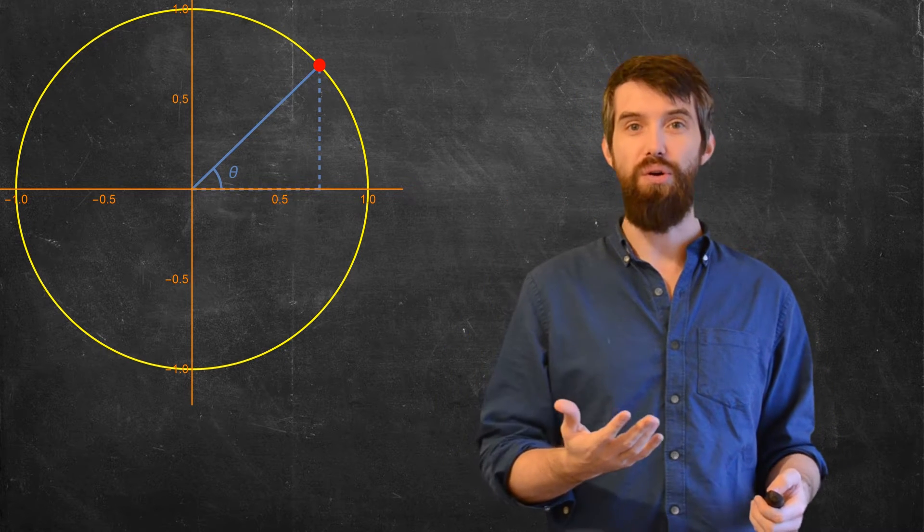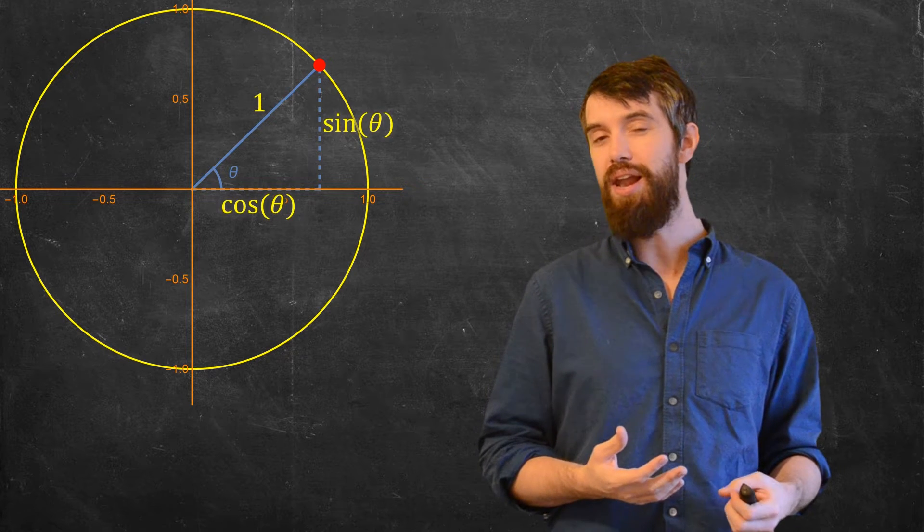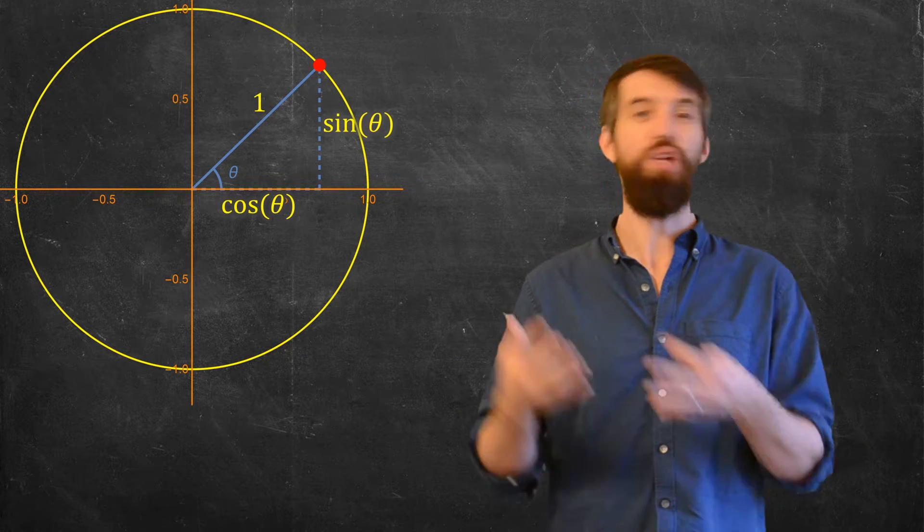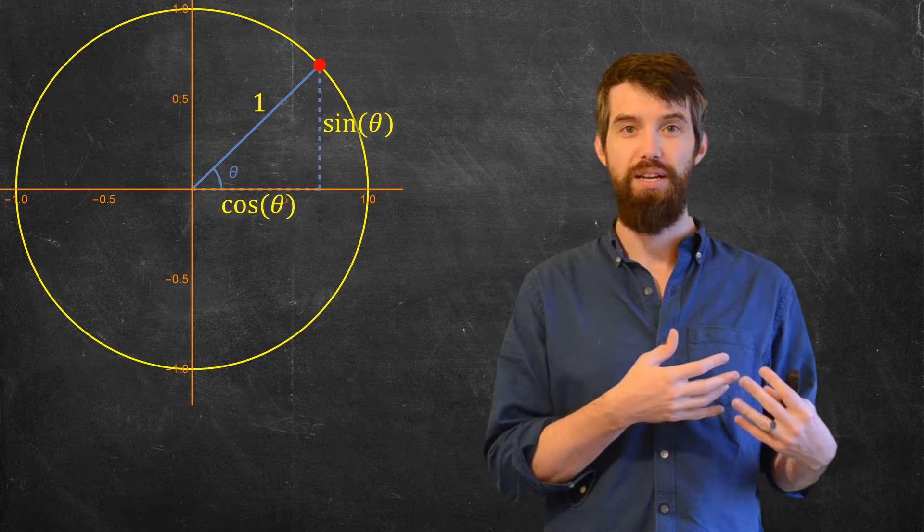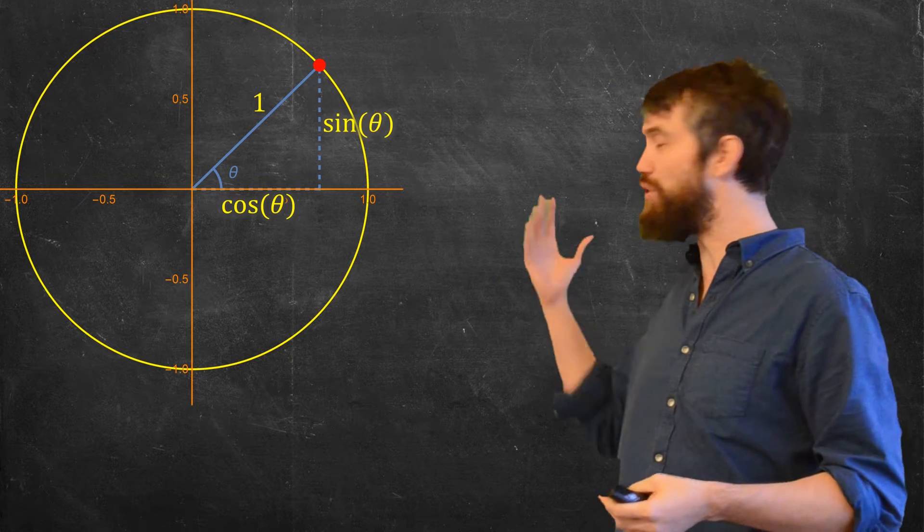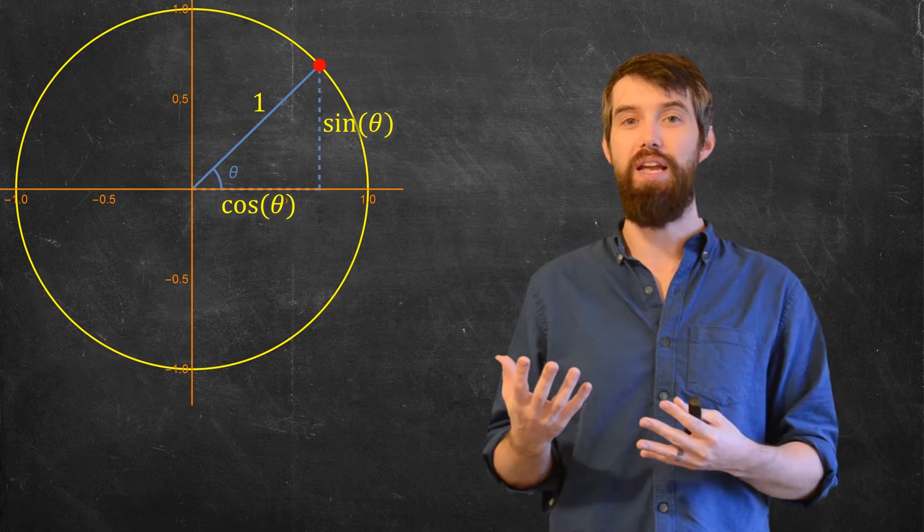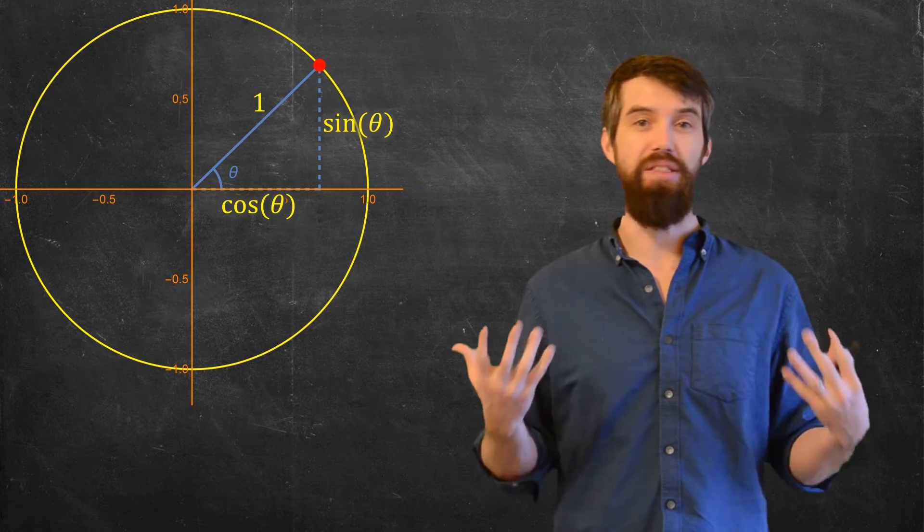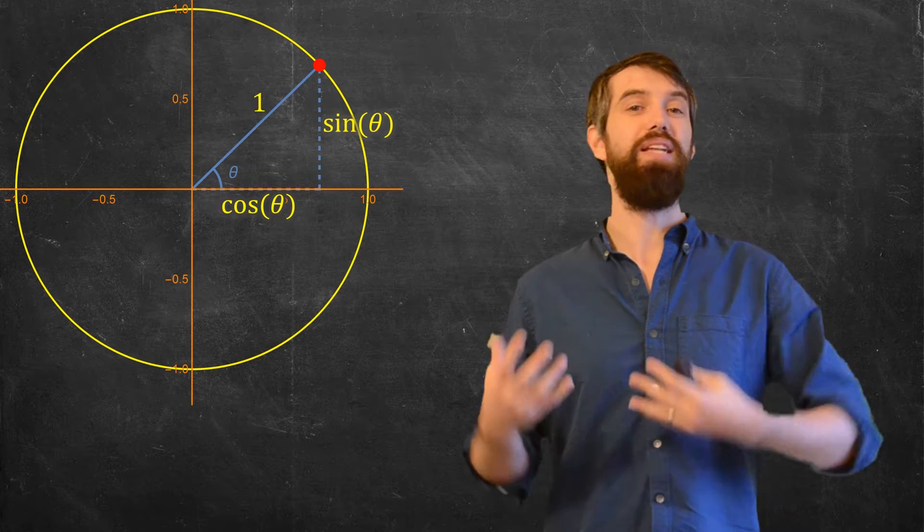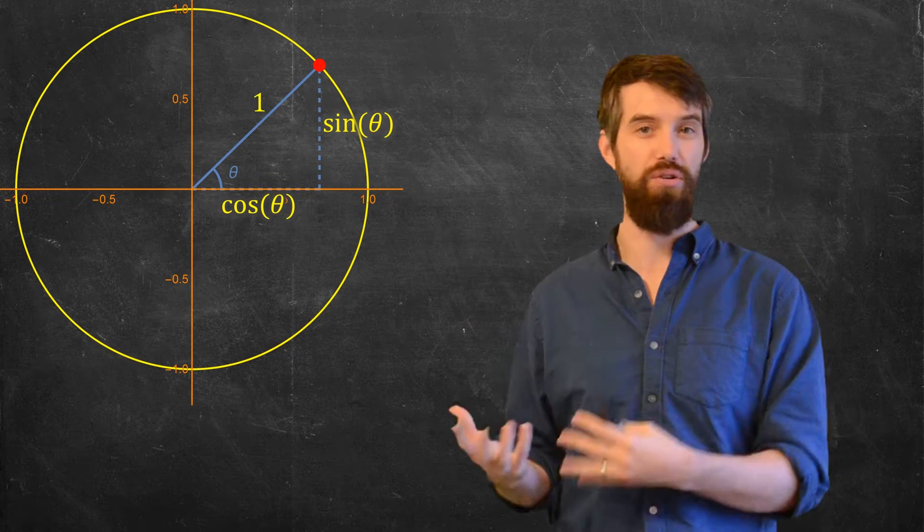Because this is a unit circle, the hypotenuse has length 1, and what that means is if I take something like sine of theta, which is opposite over hypotenuse, and the hypotenuse is 1, then sine of theta is just the opposite. So for this vertical strip, the opposite, I can put sine of theta, and for the adjacent, the horizontal base, I can write cosine of theta. This is in some sense the definition of sine of theta and cos of theta.